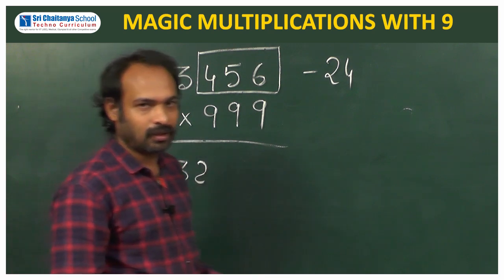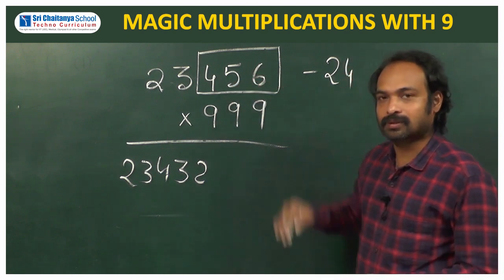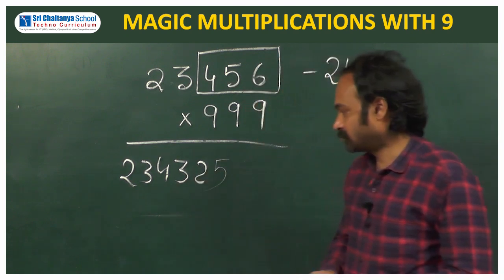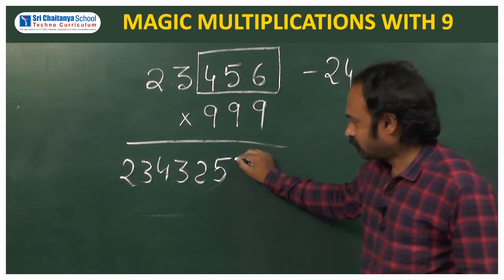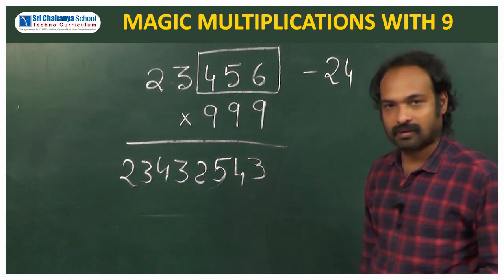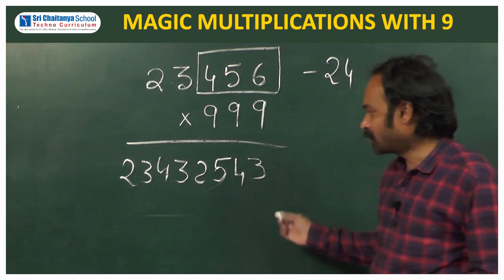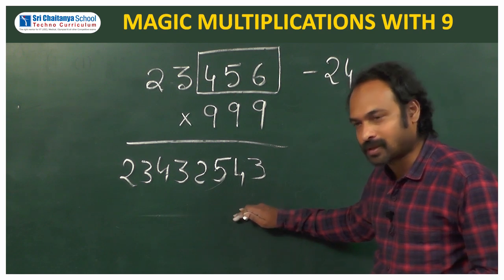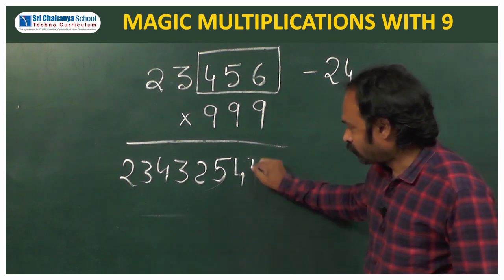Half of the part is done. The last but one step is write the complements of these numbers. What is the complement of 4? Write 5. Complement of 4 is 5. What is the complement of 5? 4. What is the complement of 6? 3. Just one step is left over — what is that one step? Add 1 to the resulting number. When you add 1 to the resulting number, this digit is increased by 1, so this will become 4. Thank you.